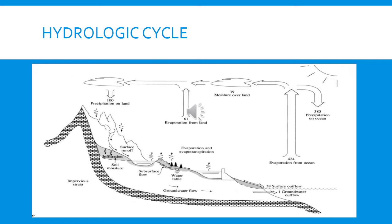We are familiar with the hydrologic cycle, but I will make it a little more detailed later. For now, let's familiarize ourselves with the components: evaporation, precipitation, infiltration, transpiration from trees and grass, and evapotranspiration — all topics we are familiar with from hydrology classes.